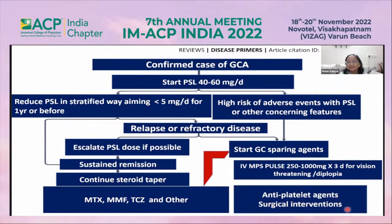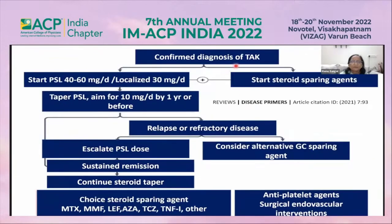Antiplatelet drugs should be given when the patient has angina, MI, TIA, or stroke. Surgical interventions should ideally be performed during quiescent disease. If there is active disease with critical ischemia, dissection, or aneurysm, surgical intervention can be undertaken in those critical situations. For Takayasu, once diagnosis is made, start prednisolone; in localized disease, a lower dose may be used.